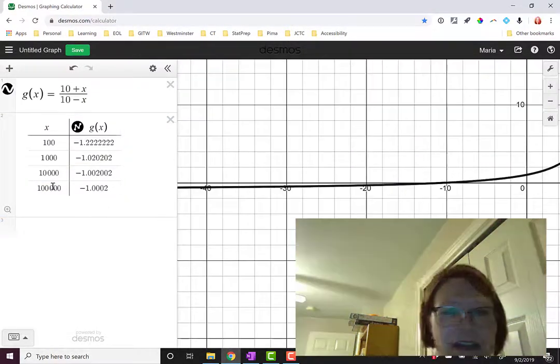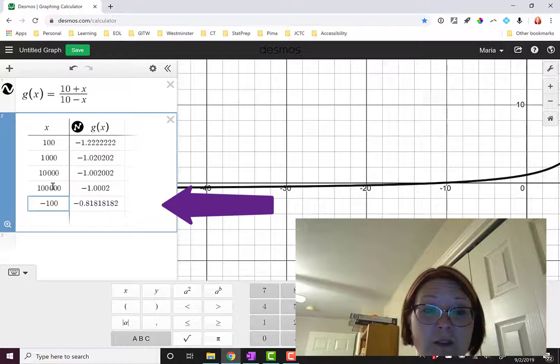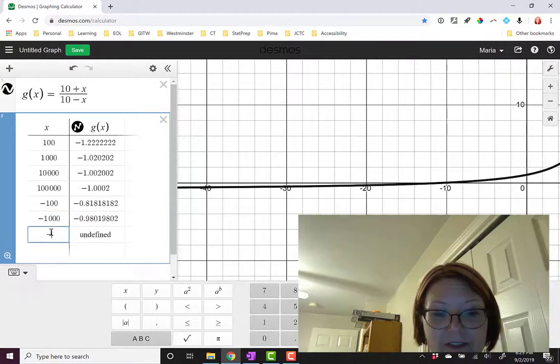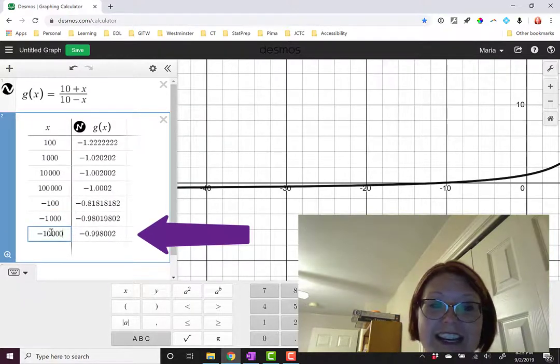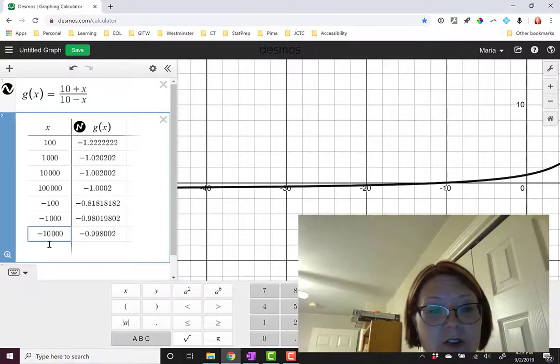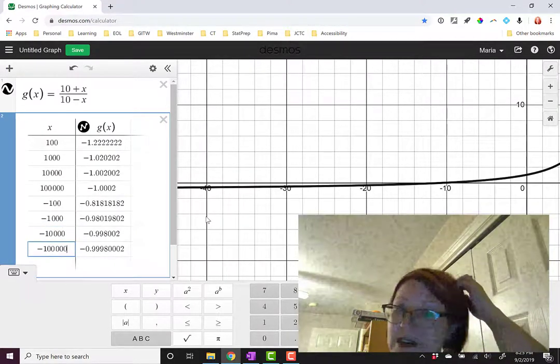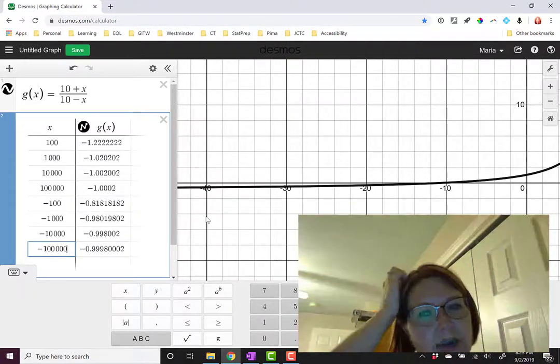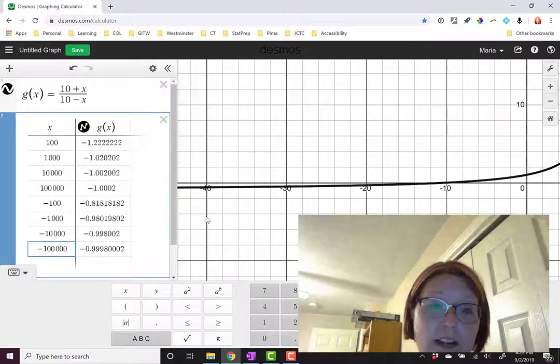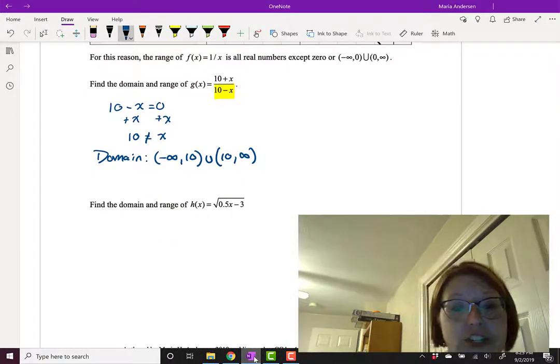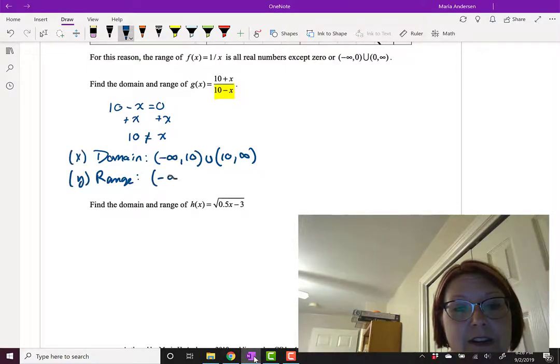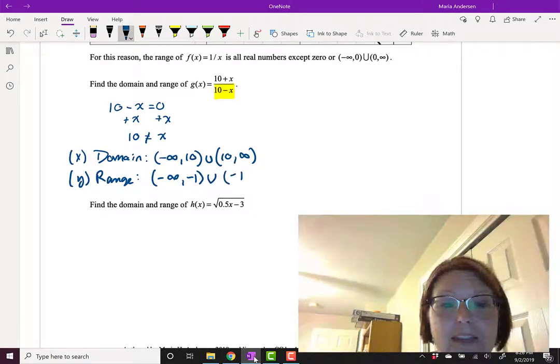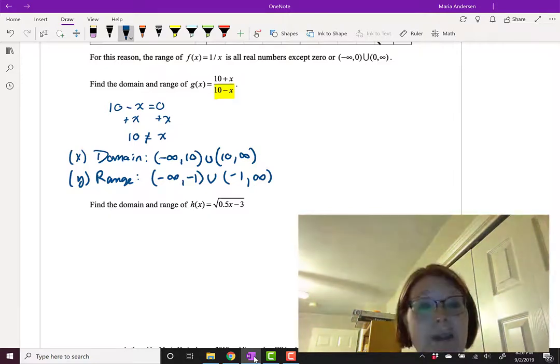Let me look in the other direction now. Let's try -100 which gives me -0.81 repeating. -1000 gives me -0.98. -10,000 gives me -0.998. So again I'm getting closer and closer to -1. Whether I go in the positive direction or the negative direction, I'm approaching -1 just above it or below it. From this I'm going to conclude that the y value I cannot have is -1. Which means that my range, in other words the y values, go from (-∞, -1) ∪ (-1, ∞). Everything but -1.